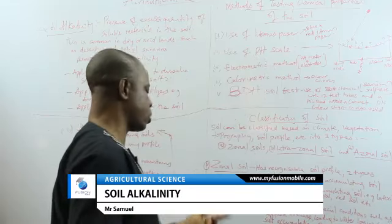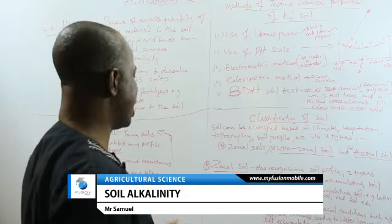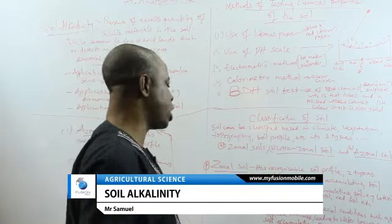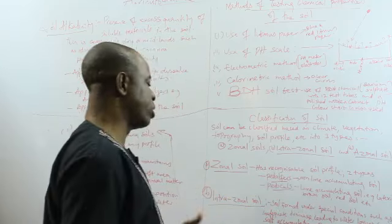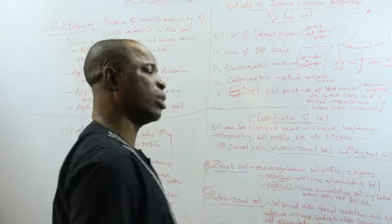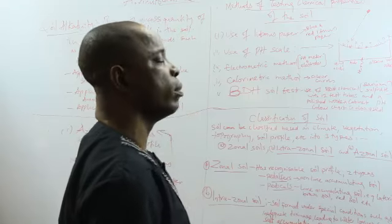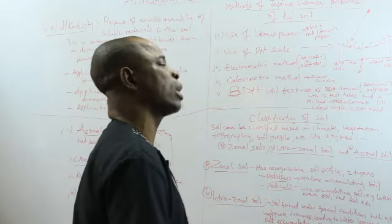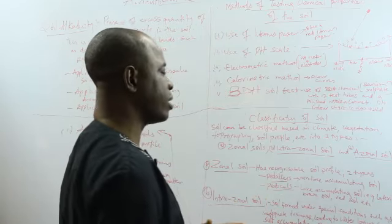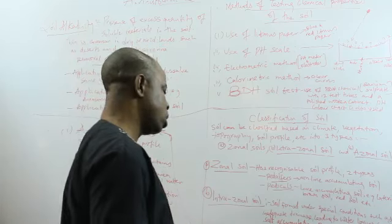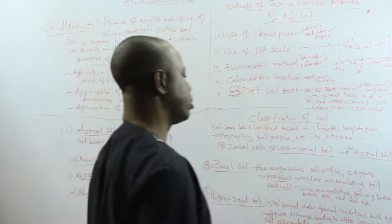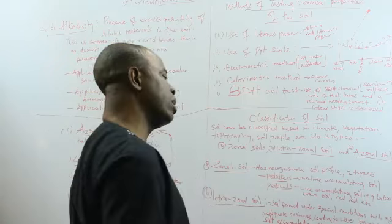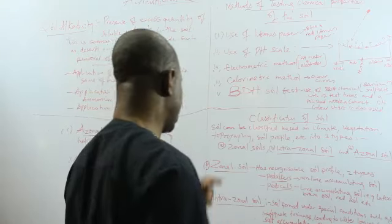Then we have the intrazonal soil. The intrazonal soil, they are partly zonal and they are partly non-zonal. So these ones, they are formed under special conditions, such as inadequate drainage. Then when you don't have adequate drainage, water will accumulate, and this water will form a kind of water logging or flood, which will result in salt to accumulate in a particular position and also result in alkalinity. When you have this kind of situation, then you have intrazonal soil. Intrazonal soil is formed because the drainage is not proper and the water has now stayed in a place and the salt has accumulated alongside with the soil.